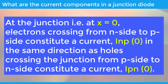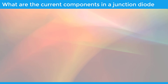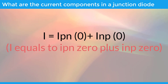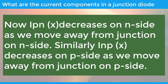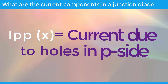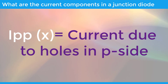Hence, the current at the junction is the total conventional current I flowing through the circuit. So I is equal to IPN(0) plus INP(0). Now IPN(X) decreases on the N side as we move away from the junction. Similarly, INP(X) decreases on the P side as we move away from the junction. But as the entire circuit is a series circuit, the total current must be maintained independent of X.